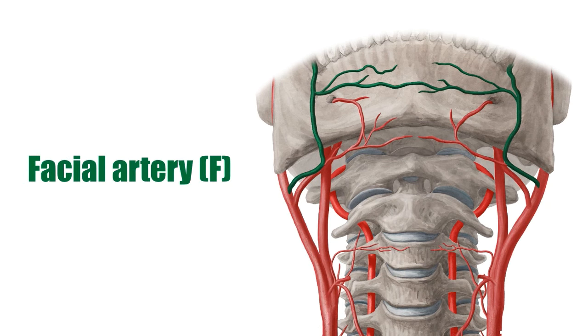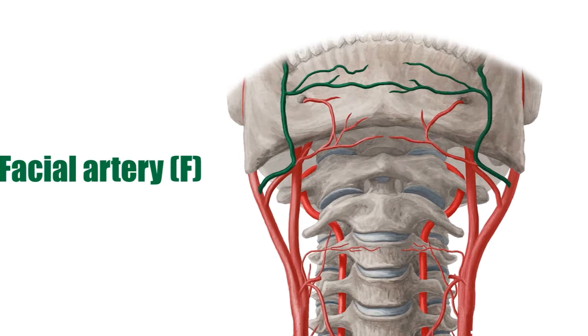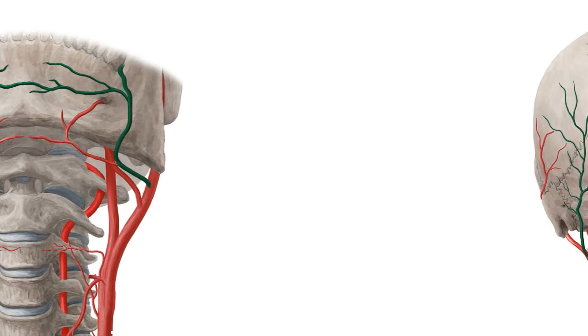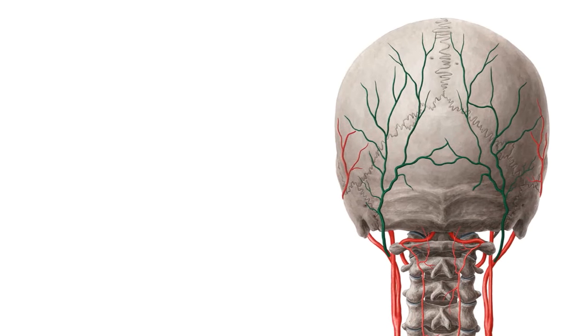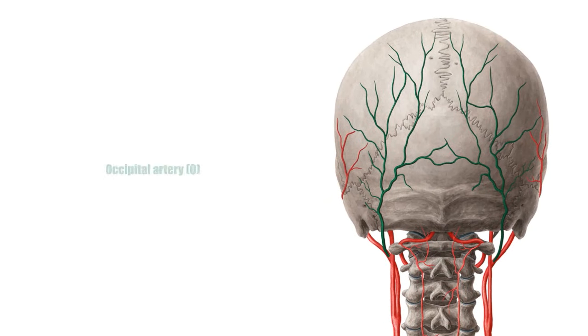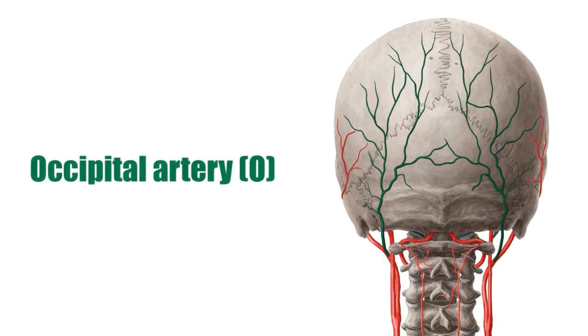The occipital artery is the fifth branch of the external carotid artery and it supplies the posterior region of the scalp. We can see it here highlighted in green.